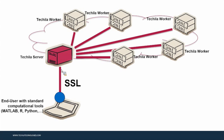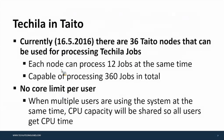That is a quick introduction to the Tequila system. Regarding CSC-specific information: currently there are 36 Taito nodes that can be used for processing Tequila jobs. Each node can process 12 jobs at the same time, meaning the system is capable of processing 360 jobs in total. Currently there is no core limit per user — if you are the only user, you get access to all cores. If there are multiple users, the Tequila system shares the computation capacity so each user gets at least some CPU power.